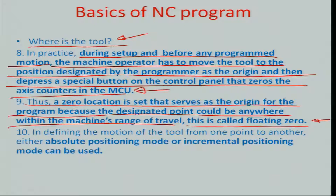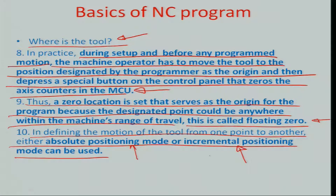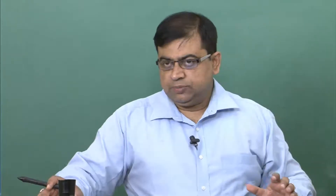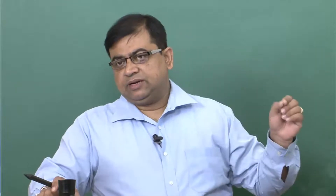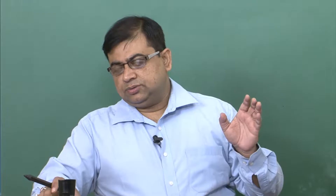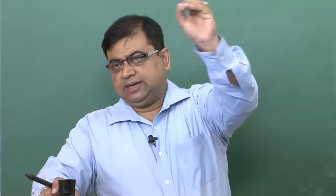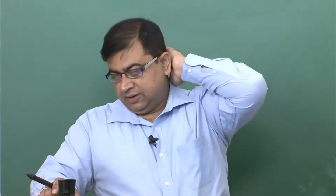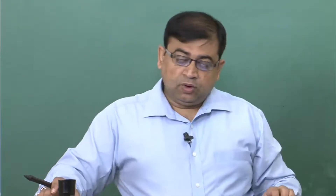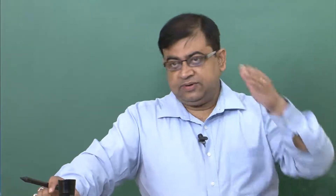In defining the motion of the tool from one point to another you follow different positioning systems: absolute positioning and incremental positioning. Absolute positioning means that with respect to the origin, every coordinate point on the tool geometry is read with reference to that origin. In incremental positioning, you only think about the next increment from your current position to reach the next point. There is computational saving for the human, but you are taxing the controller more because it has to find the relative position with respect to the origin from each incremental command — a more computationally exhaustive process.